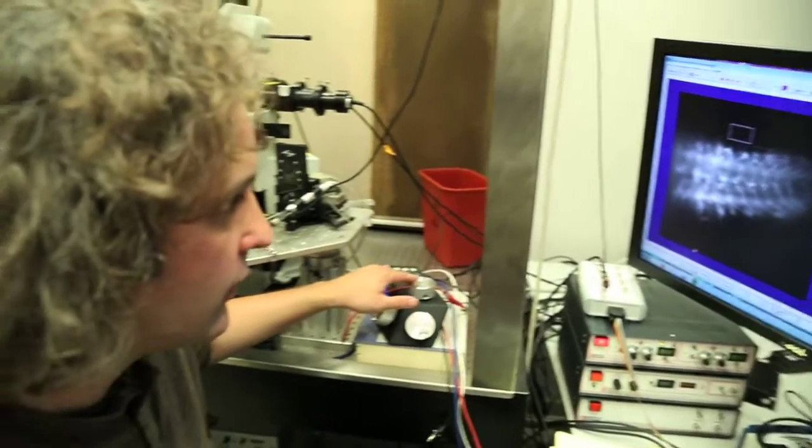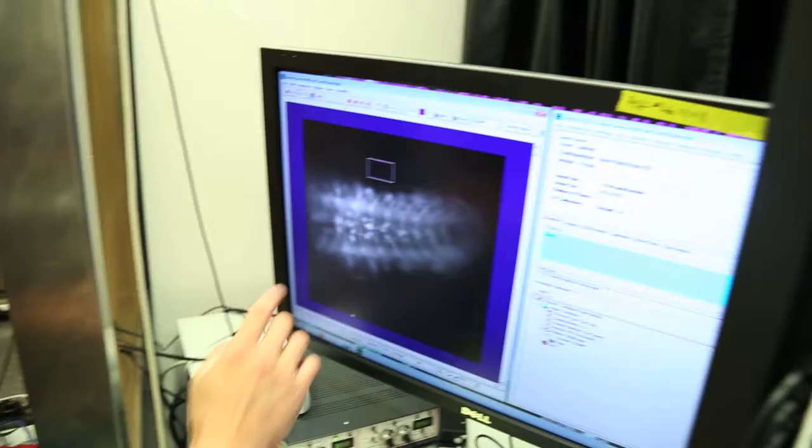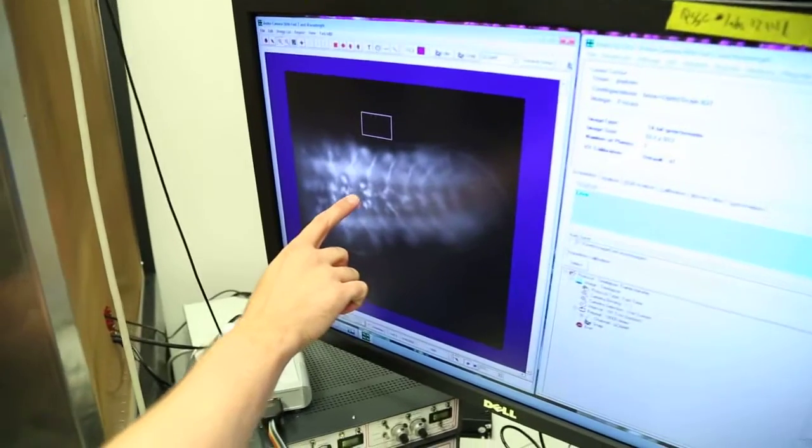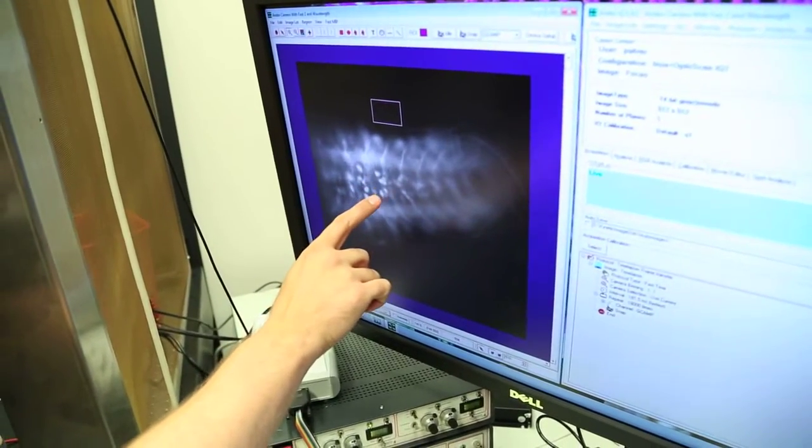I study how rhythm-generating circuits function in Drosophila larvae. So these are cell bodies. These are motor neuron cell bodies.